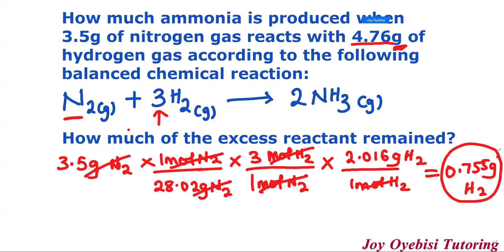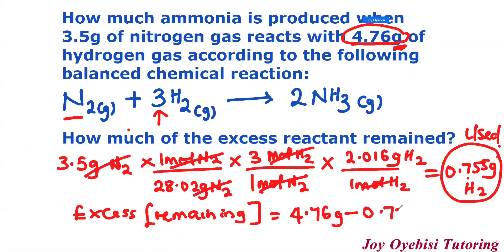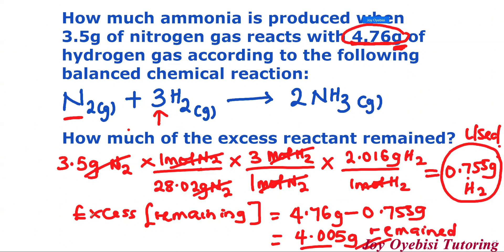This value of 0.755 grams is what was used. So the excess — what was remaining — equals the original value of 4.76 grams minus the 0.755 grams that was used, which gives us 4.005 grams remaining. I hope this video has helped you understand how to do limiting and excess reactant calculations. Have a wonderful day.